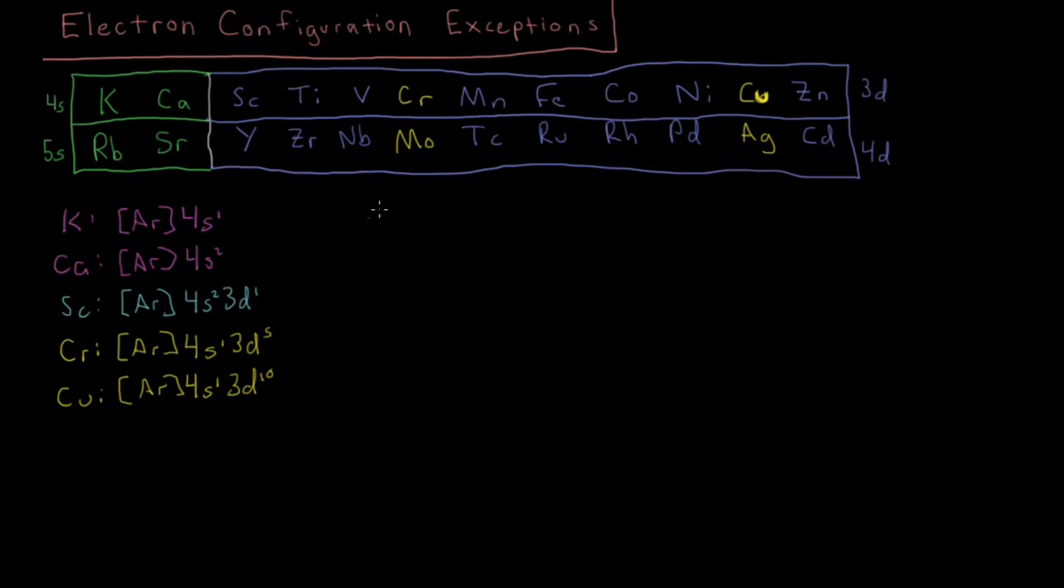And you'll notice a similar thing if you go to molybdenum or silver, they have similar exceptions to that rule where they have their respective noble gas, the noble gas at the end of the fourth row being krypton, and then they have 5S1, 4D5 for molybdenum, and for silver you have the krypton configuration, then 5S1, 4D10, in contrast to the expected 5S2, 3D9.